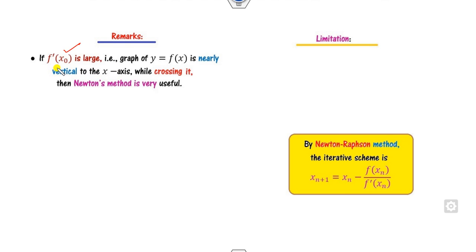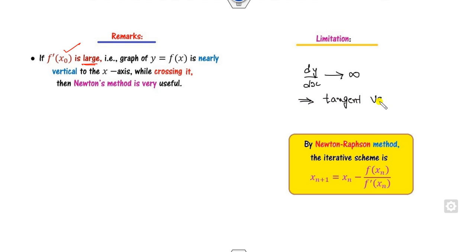The first remark is: whenever the derivative at a particular point is large — meaning dy/dx approaches infinity — the tangent is nearly vertical to the x-axis. So the Newton-Raphson method is very useful when the slope is very large.